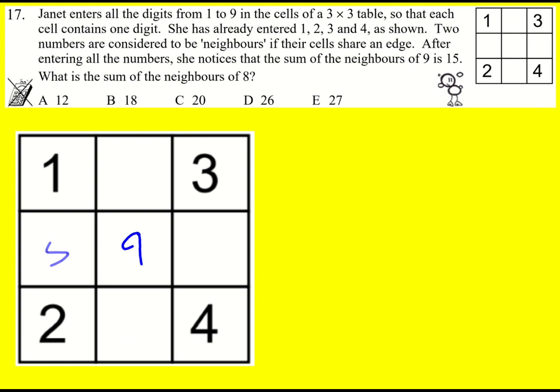So through a process of elimination, and you know, you might have got there quicker than me, I was explaining why the others don't work. It's got to go here, and that means that we've got 7 to get to 15. 8 has to go here, and this is great because we actually want to sum the neighbors of 8.